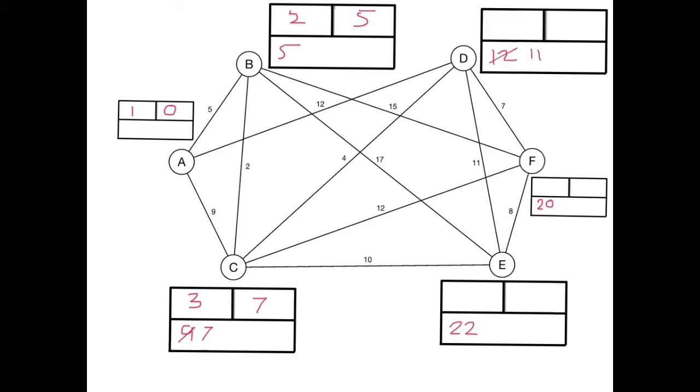I can get from C to F in 7 plus 12 is 19 so that's better and I can get from C to E in 7 plus 10 is 17. So each of those was made better.